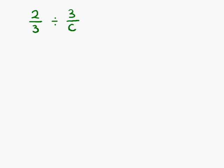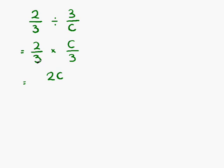Example three. We have two-thirds divided by 3 over c. So again, we change it to a multiplication, which means we have to invert the second fraction, or flip it upside down. So two-thirds multiplied by c over 3. On the numerator, we have 2 times c, which is 2c. And on the denominator, 3 times 3, which is 9. Can we simplify? We can't, so 2c over 9 is our final answer.